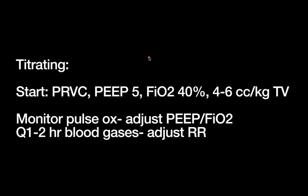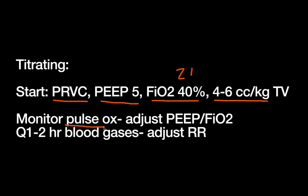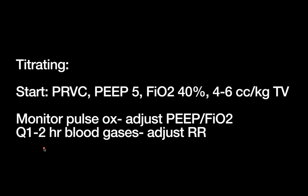Starting out in the SICU with a patient: start with basic PRVC settings, a reasonable PEEP of five, FiO2 a little above room air, and low tidal volumes. Then titrate from there, thinking about oxygenation and CO2. Monitor oxygenation with the pulse ox and adjust PEEP or FiO2 accordingly — remember not to forget the PEEP. Once someone is on the ventilator, get a blood gas about an hour later, then every one to two hours to adjust ventilation, most typically by making small tweaks to the respiratory rate.